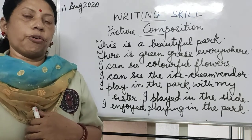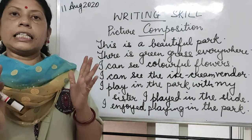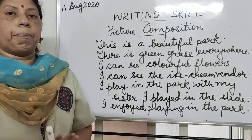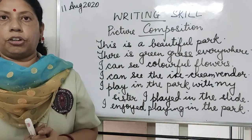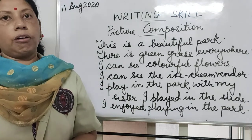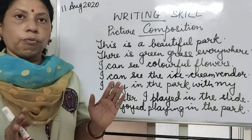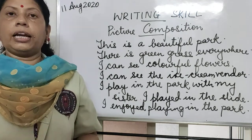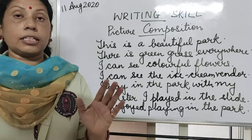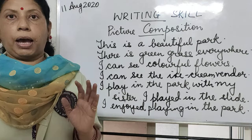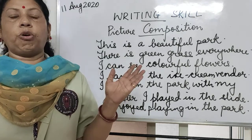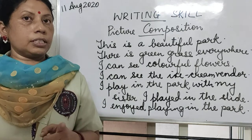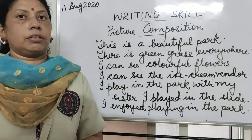Today I would like to give you homework: write at least 5 to 6 sentences on your park. You can stick a picture of a park in your copy and then frame sentences on your own. It is not necessary to write only 5 or 6 sentences — you can write more if your grammar and construction are correct. Your spellings also should be right.